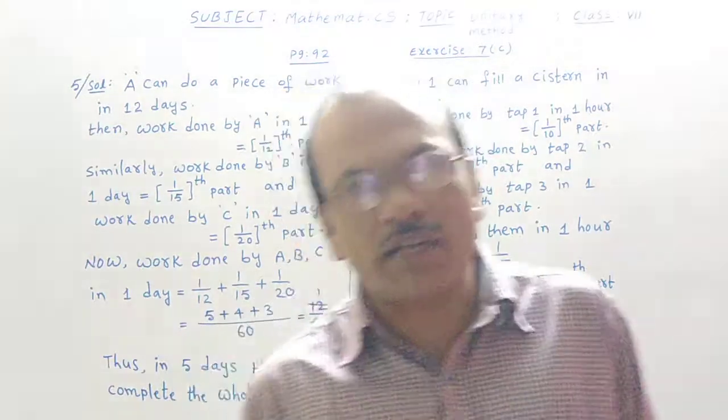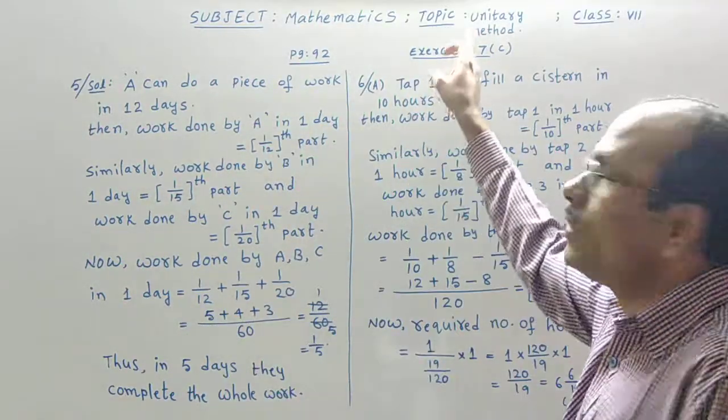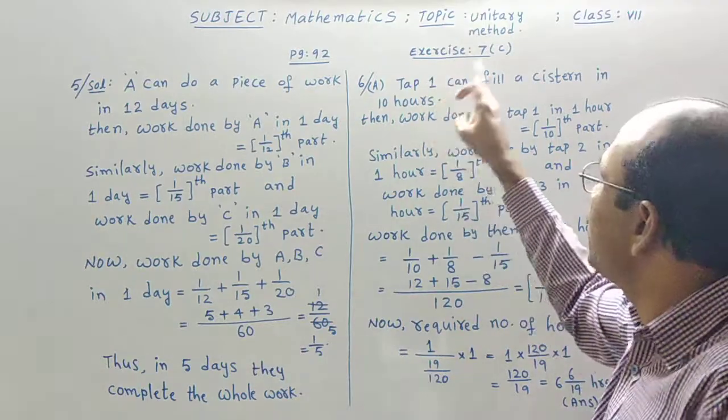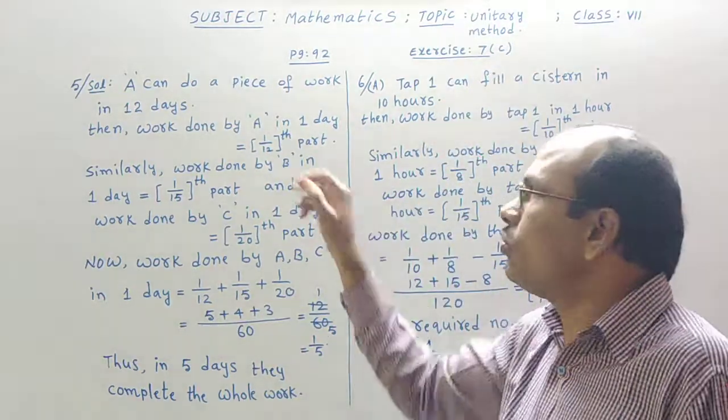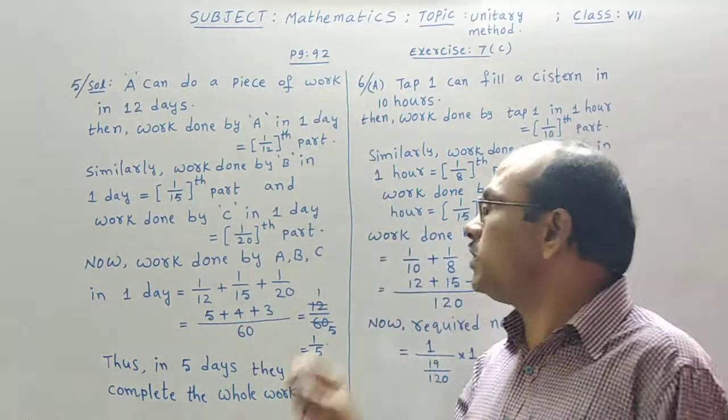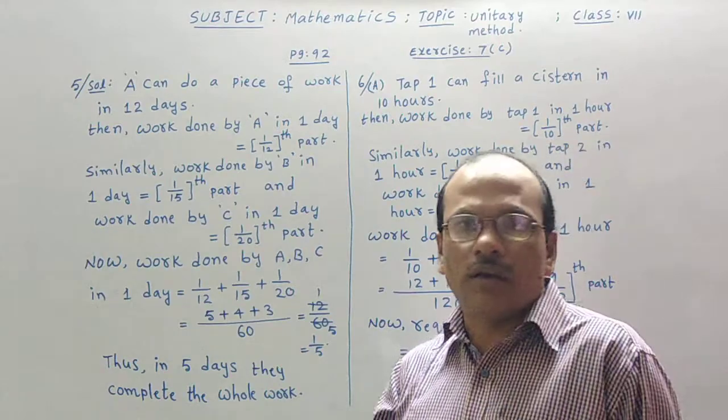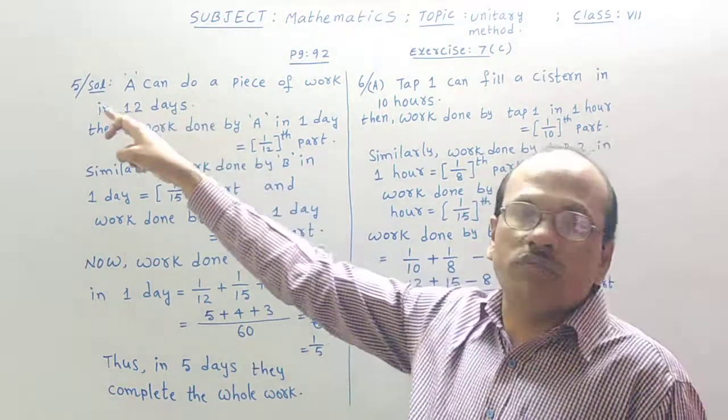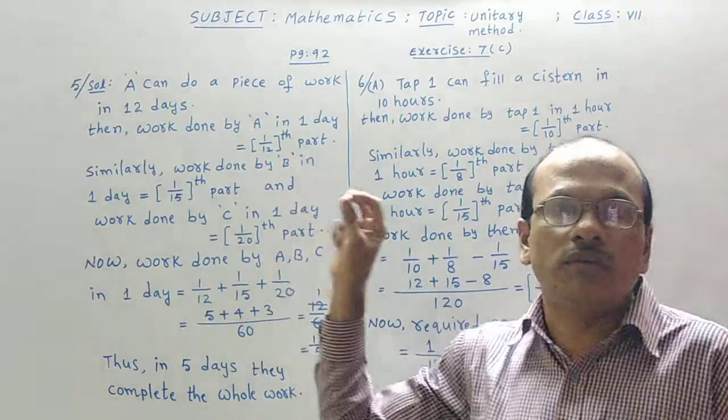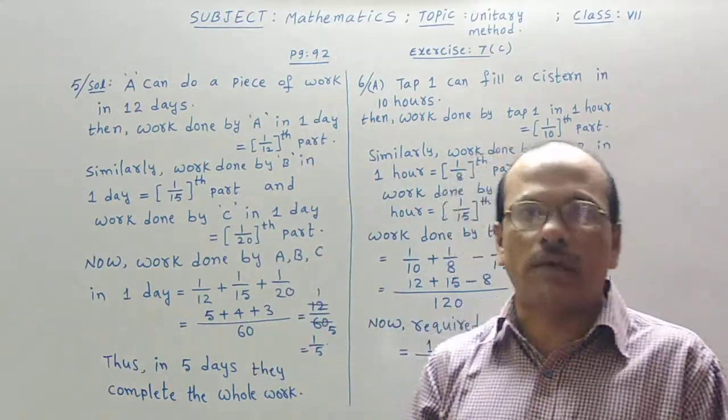Good morning students. Welcome to our Maths class. We were in the chapter Unitary Method, exercise 7c. All of you take out your Maths textbook for page number 92. Let us see question number 5. All of you look at the board. Here is information given for question 5. Based on that we have to narrate some steps to get this answer.